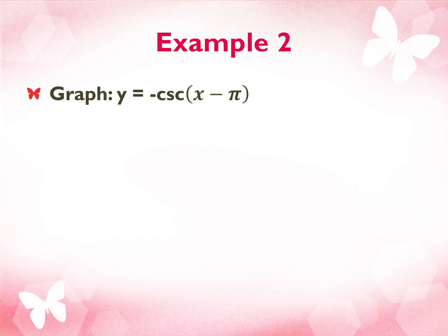Go to example two: y equals negative cosecant of (x minus π). What are we going to graph before we get to cosecant? Negative sine of (x minus π) is what I'm going to graph first.